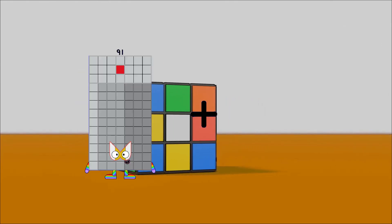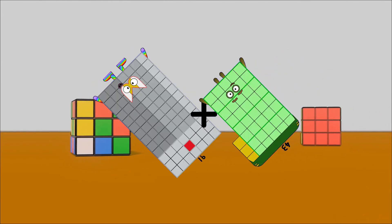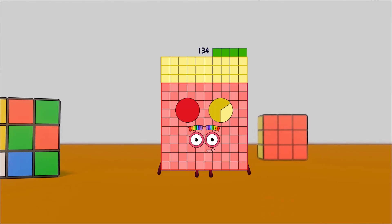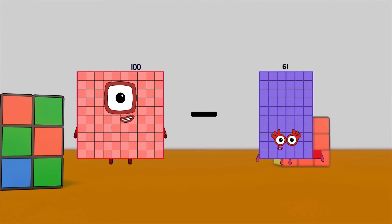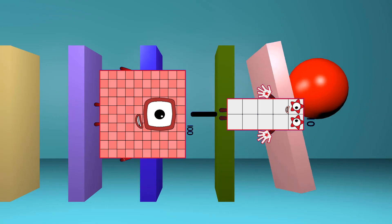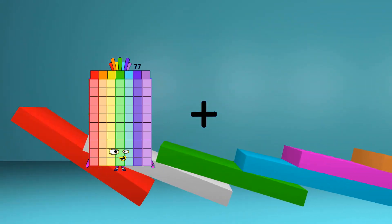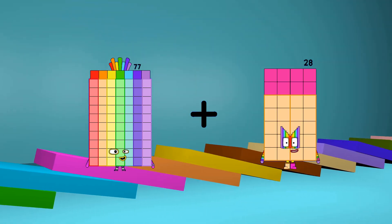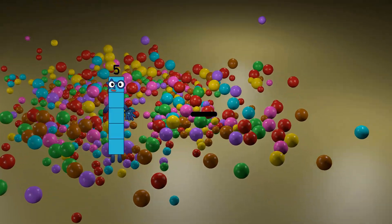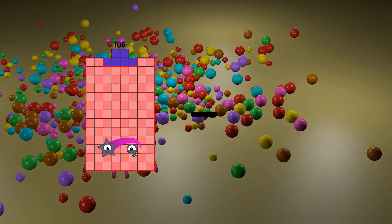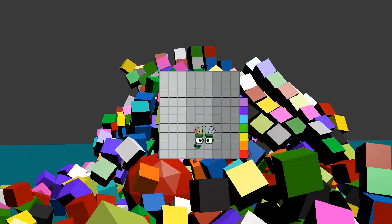91 plus 43 equals 134. 100 minus 10 equals 90. 77 plus 23 equals 100. 106 minus 9 equals 97.